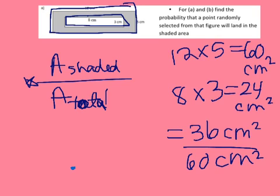So our final answer then is 0.6, because that's what you get when you do 36 divided by 60.